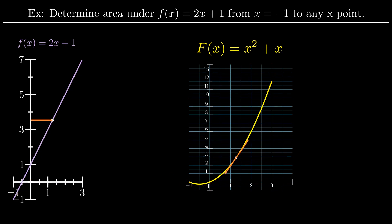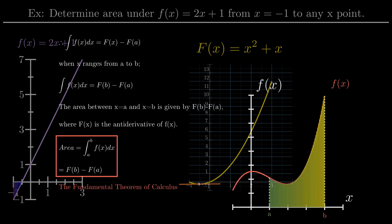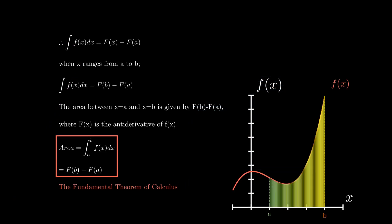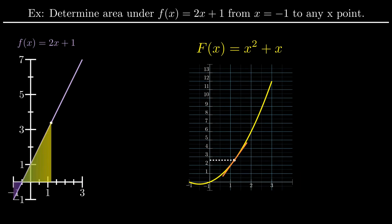Overall, the fundamental theorem of calculus relates slopes and areas, and the formula of the fundamental theorem of calculus says to find the area under a function f of x from a to b, evaluate the anti-derivative of the function, and take the difference of capital F of b and capital F of a.